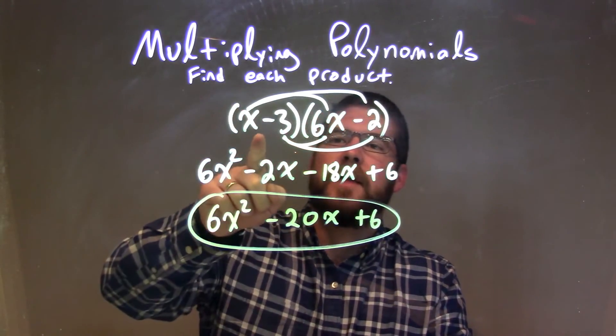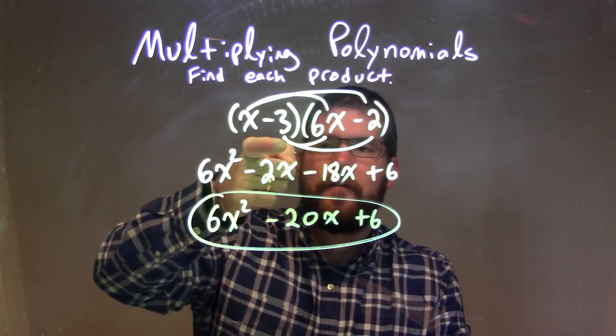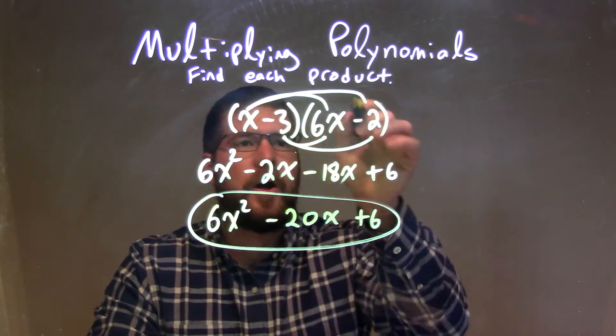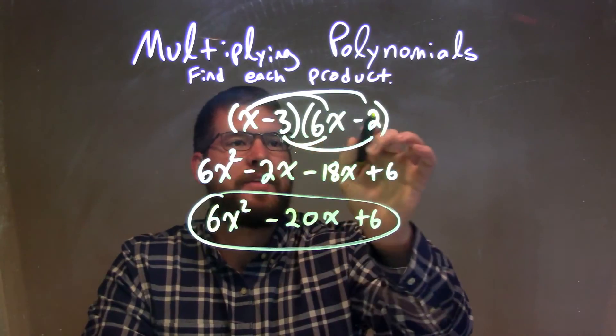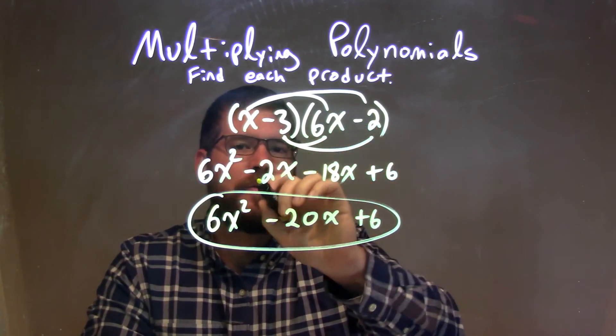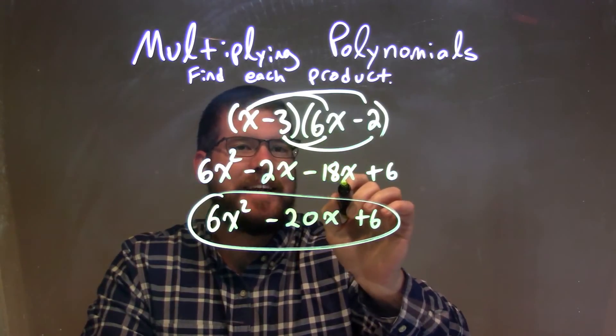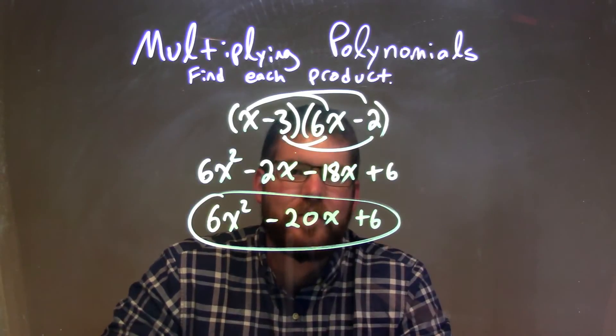So to recap, we're given x minus 3 times 6x minus 2. I multiplied all parts of my first parentheses times all parts of my second parentheses, and I drew my arcs to make sure I brought everything over. x times 6x was 6x squared, x times minus 2 was a minus 2x, minus 3 times 6x was a minus 18x, and minus 3 times minus 2 was a positive 6.